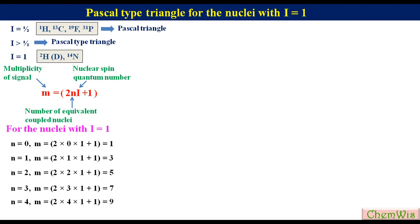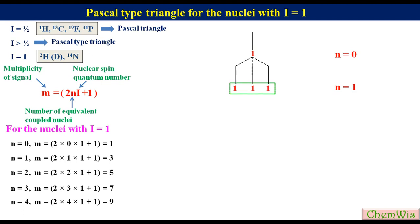Now let's make the Pascal type triangle. If the nucleus is non-coupled, that is n = 0, the signal will look as a singlet, so there will not be any question about the intensity ratio. If n = 1, from the previous calculation there will be 3 sub-peaks, so this signal will split into 3 sub-peaks with the intensity ratio of 1:1:1.